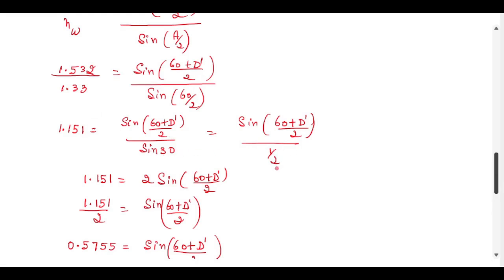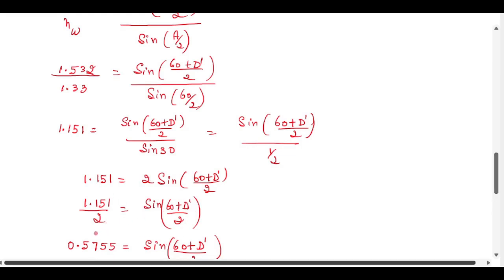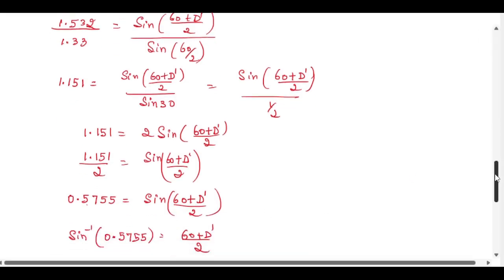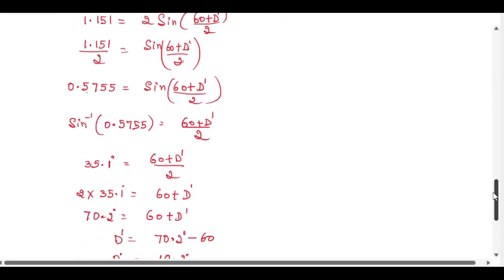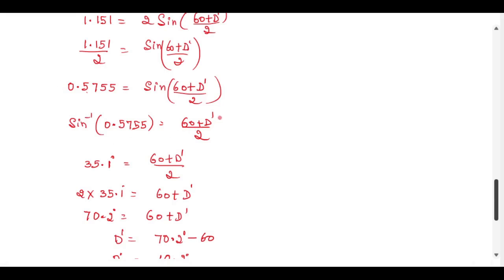We know that sin(30) equals 0.5. So we get 1.151 = 2 × sin((60 + D')/2). Bringing the 2 to the left side: 1.151/2 = sin((60 + D')/2), which gives 0.5755 = sin((60 + D')/2). Bringing sin to the left-hand side: sin⁻¹(0.5755) = (60 + D')/2.